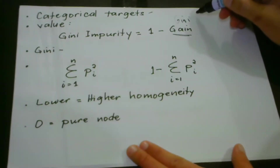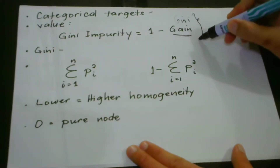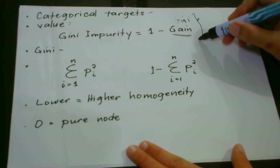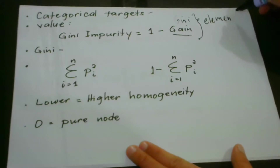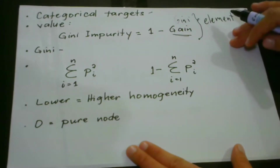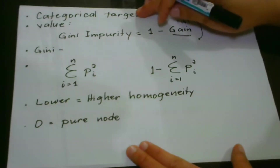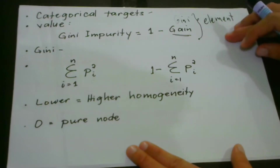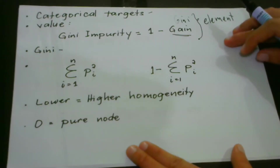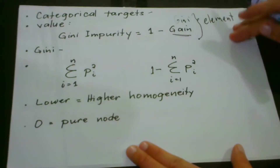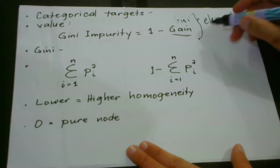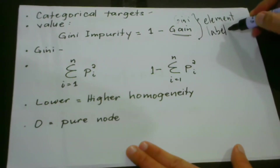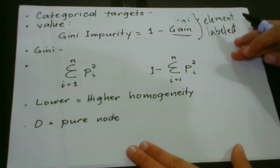Gini can be best explained using the following terms. We have a randomly chosen element. For a certain set of categorical values, the elements are randomly chosen. And apart from being randomly chosen, they are also randomly labeled. The labeling is actually based on the distribution of labels in the node.